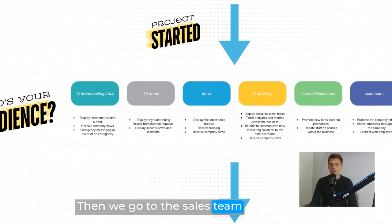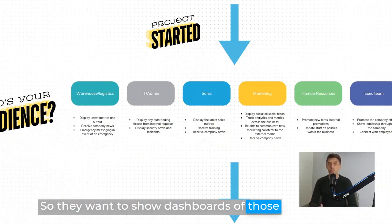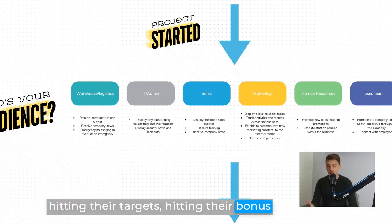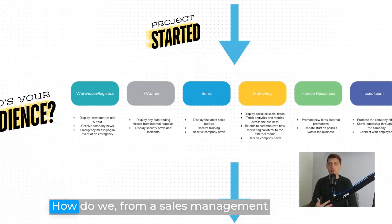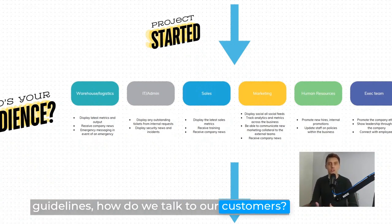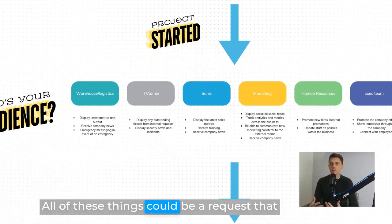Then the sales team — they're looking for displaying the latest sales metrics, showing dashboards of sales information right in front of them so they can be motivated, gamify progress, and keep track of what they're trying to get to — hitting their targets, their bonus, and getting those metrics over the line. Training is also requested: how do we keep training and onboarding at the forefront? Brand guidelines — how do we talk to customers, what is our language? And again, company news.